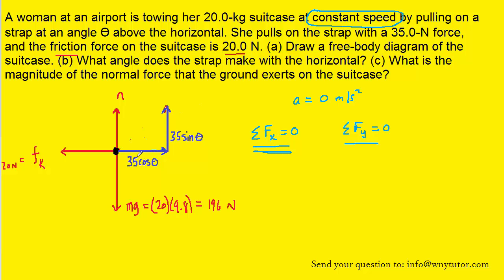So the sum of the forces in the x direction, notice that there are two forces acting in the x direction. We have 35 cosine of theta and then we have this kinetic frictional force. Because the kinetic frictional force is pointing to the left, we've got to make sure that we use a negative sign when we plug it into the equation.